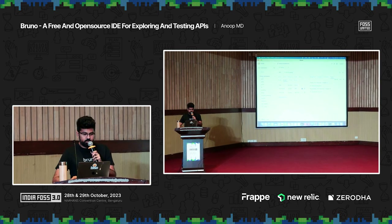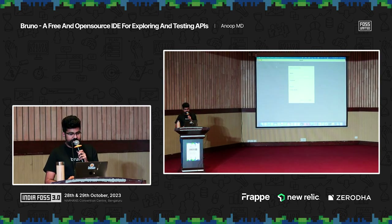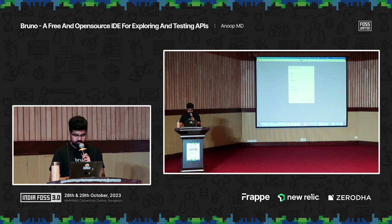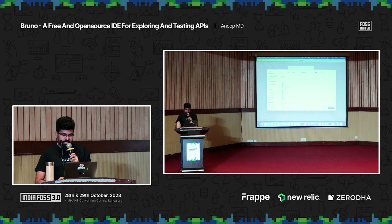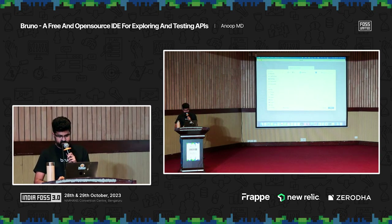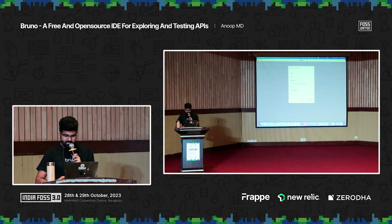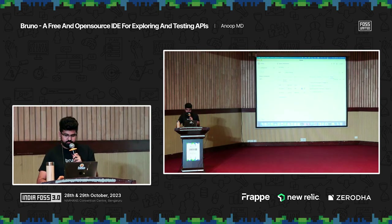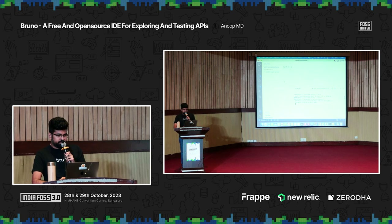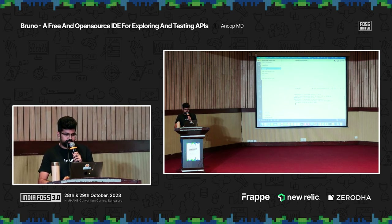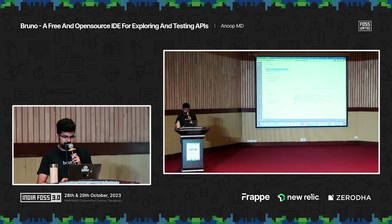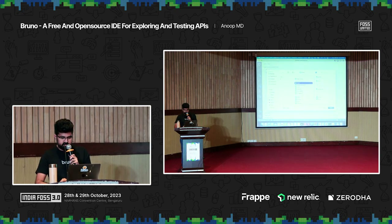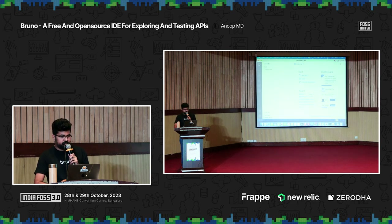I'm going to show you how we create a collection in Bruno. I'll create a collection, call it 'test collection', choose the location as the desktop, and give the folder name as 'test'. Now I have a test collection here. I'm going to bring this up in VS Code and open the folder. So actually, there's nothing in the test folder — it's just a Bruno.json file.